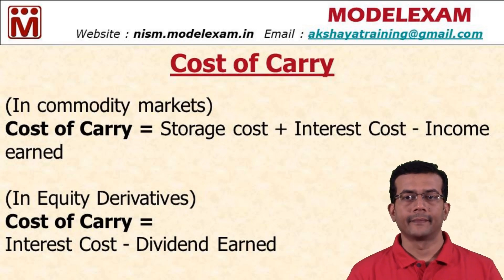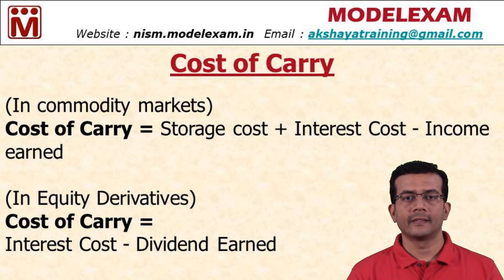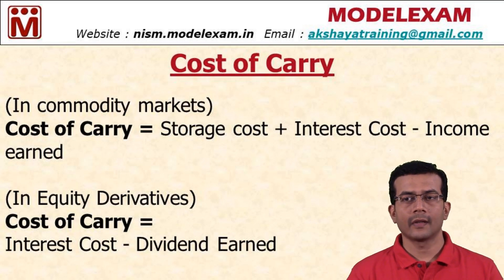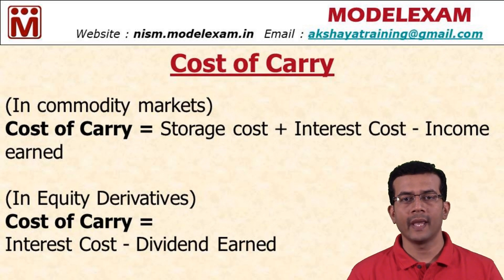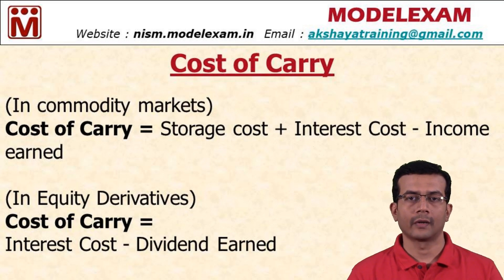The cost of carry in commodity markets is the storage cost plus the interest cost minus the income earned. There is a storage cost for commodities because if you are buying a commodity, you need a place to store it, so it involves a storage cost.